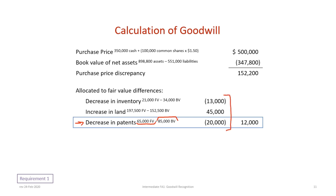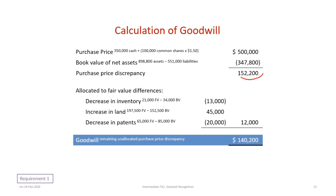Adding all fair value differences together: the $45,000 excess on land exceeds the negative amounts on inventory and patents, netting out to $12,000. Of the $152,200 purchase price discrepancy, $12,000 can be allocated to fair value differences in those assets. Once we subtract that $12,000 allocation, the amount left over is the goodwill — the remaining unallocated purchase price discrepancy.